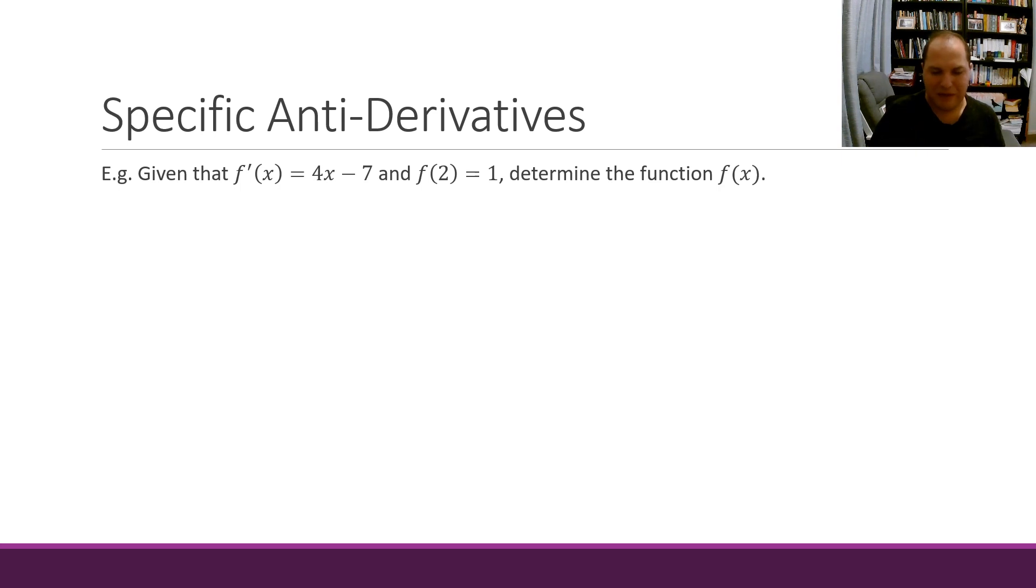We've got our example here: F dash x equals 4x minus 7, and we're given some initial condition. My original function at x equals 2 is equal to 1. So with that information, we should be able to work out what the value of c is, and hence have a complete function F x.